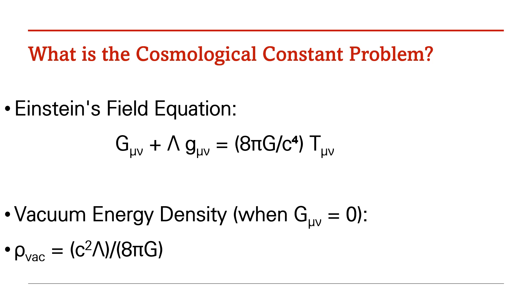According to Einstein's field equation, formulated as G_μν plus Λ g_μν equals 8πG divided by c⁴ times T_μν: G_μν is the geometric part, Λ is the cosmological constant, g_μν is the spacetime metric, G is the gravitational constant, C is the speed of light, and T_μν is the energy-momentum tensor.